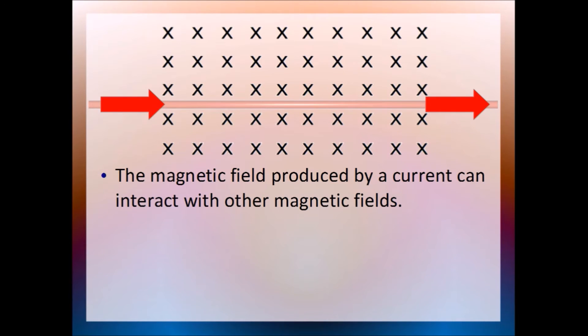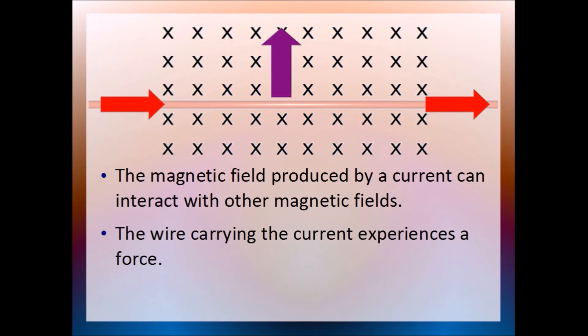There are two magnetic fields here, the one shown by the crosses and the one generated by the current. It's like we have two magnets. And do you remember what happens when you put two magnets together? You get a force. Here is the force acting on the wire. And it points straight up.